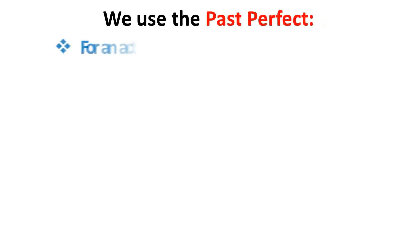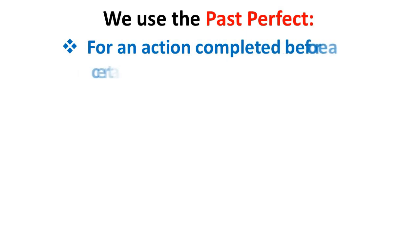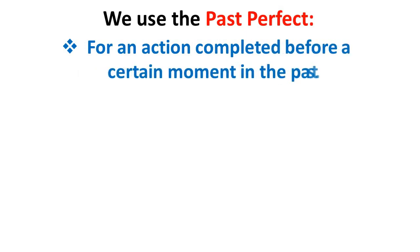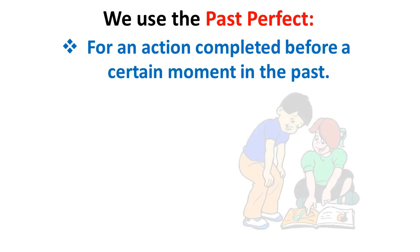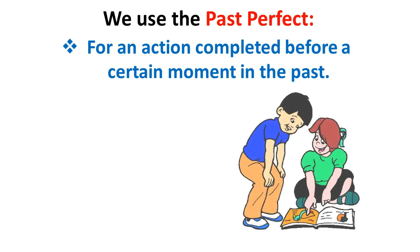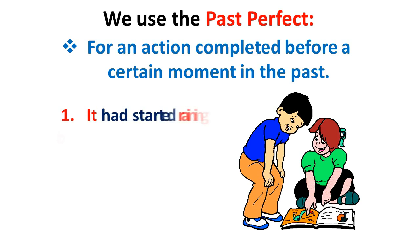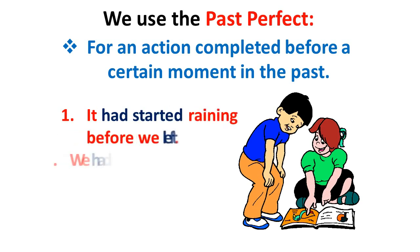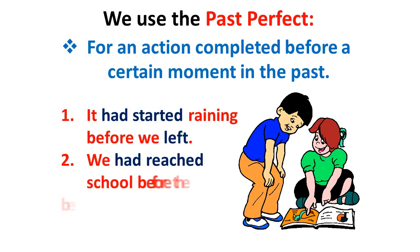We use the Past Perfect for an action completed before a certain moment in the past. For example: it had started raining before we left; we had reached school before the bell rang.